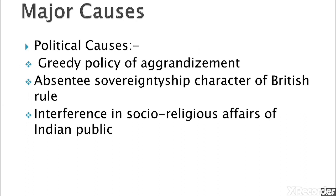Now we will see the political causes. The East India Company's policy of aggrandizement was accompanied by broken pledges and promises, resulting in contempt for the company and loss of political prestige, besides causing suspicion in the minds of all ruling princes in India. Through the policies of effective control, subsidiary alliance, and Doctrine of Lapse, the British had gained control over a large tract of India. Indian princes no longer trusted the company, causing animosity between them.